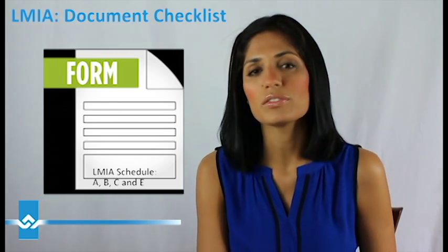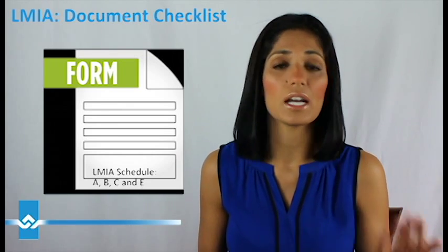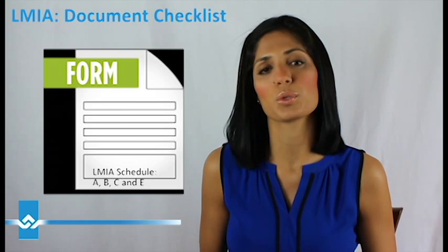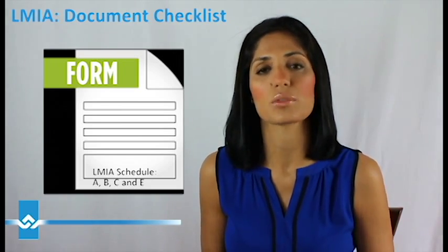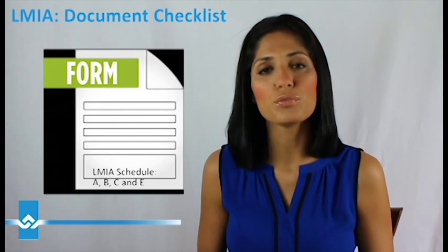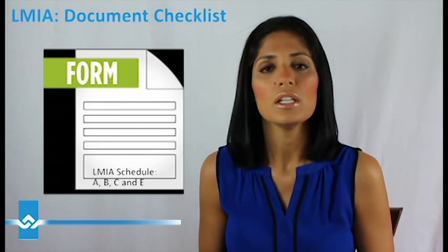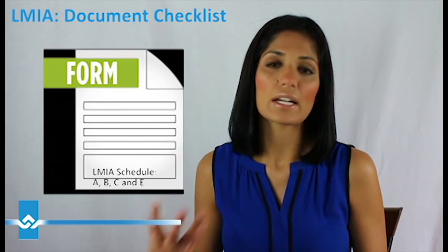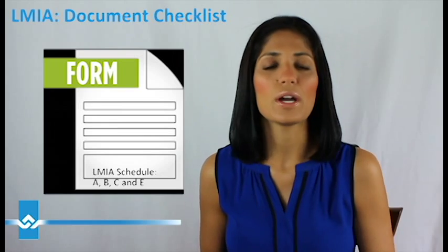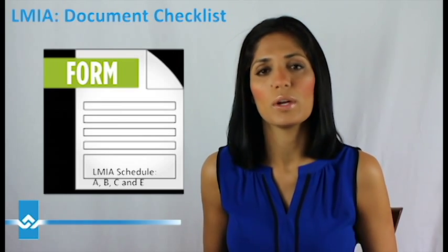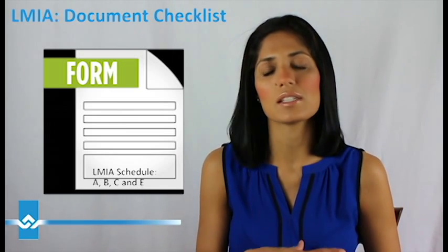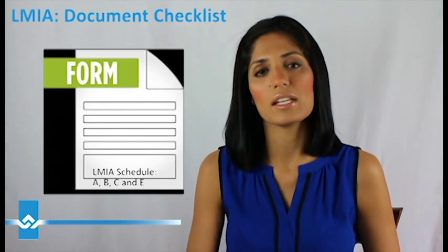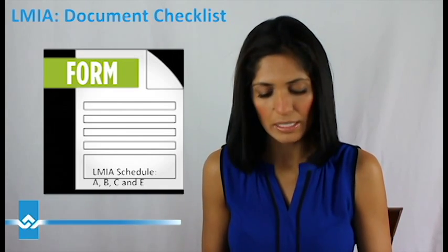The other thing to remember is that the application is divided into high-skilled and low-skilled. You want to make sure that based on your skill level, you file the necessary application form. If you file the wrong form — say your skills are considered high-skilled and you accidentally complete the low-skilled form — your application will be returned to you and you will have wasted processing time. So look at the NOC, look at the matrix, and see if your NOC is under the high-skilled or low-skilled category, and make sure you complete the necessary forms accordingly.